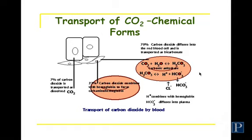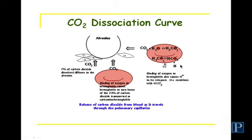At the level of the lungs, the binding of oxygen causes a change in the shape of the hemoglobin molecule, releasing those hydrogen ions that were bound to histidine. These hydrogen ions then combine with bicarbonate, forming carbonic acid, which dissociates into CO2 and water — the complete reverse of the earlier reaction.